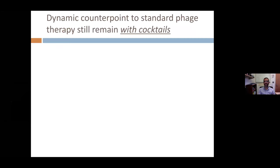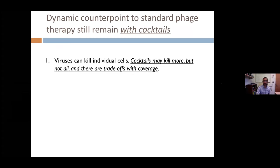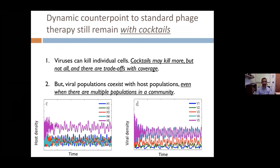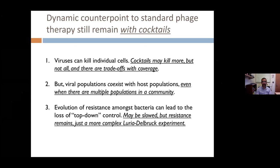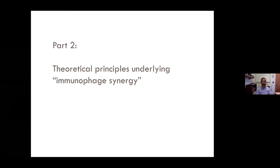Some concerns of standard phage therapy still remain even with cocktails. Yes, cocktails may kill more but not all, and there may be trade-offs with coverage because you're making a choice about which particular phage to use. We see natural systems that are diverse and coexisting with host populations, and theoretically there can be coexistence amongst more diverse communities. You may just have complex coexistence rather than a single oscillatory dynamic, and there still can be the problem of evolution with a more complex escape mechanism.